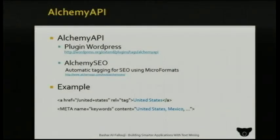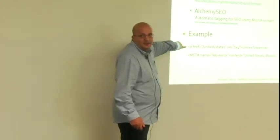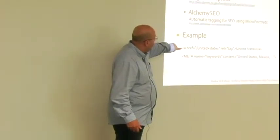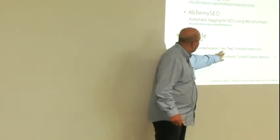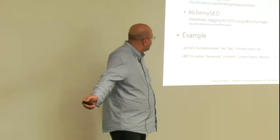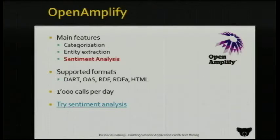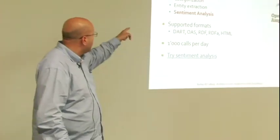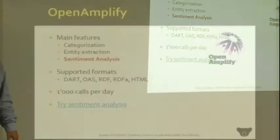Alchemy API, like Open Calais, is integrated with different applications like WordPress — they have a plugin that does the same thing as Tagaru. They also have Alchemy SEO with automated tagging and microformats. Open Amplify is another provider I would point out specifically for sentiment analysis — the others don't offer it. Alchemy also does sentiment analysis.